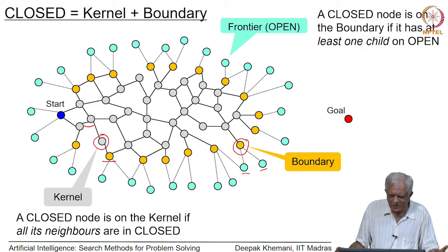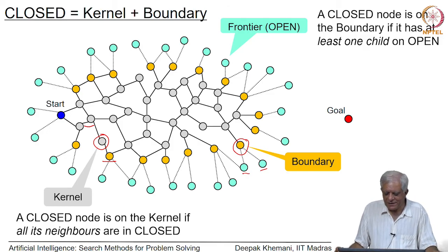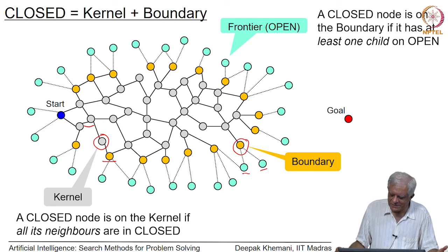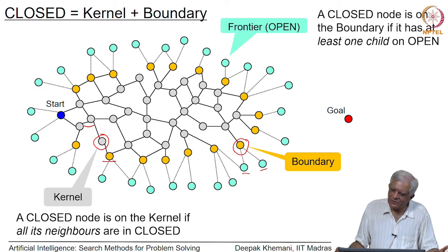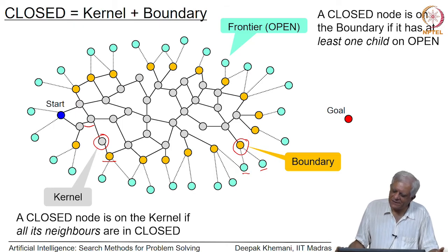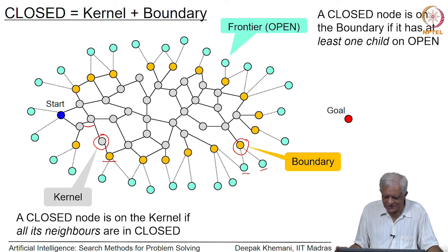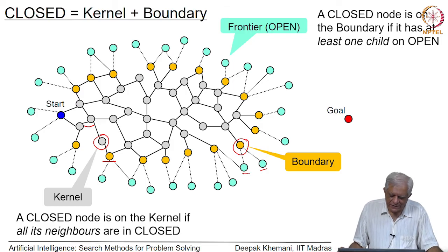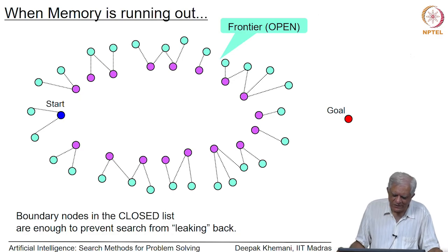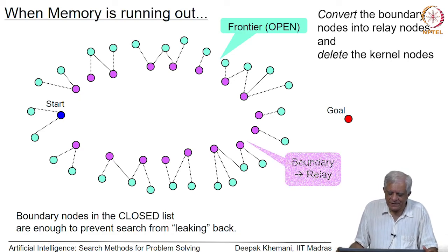Kernel nodes are those which have all their neighbors already in closed, so there is no possibility of them being generated as a child of any node on open. Boundary nodes are those which have some child on open, meaning it is possible that one of those children may be picked for expansion and would generate a neighbor that includes the boundary node. The boundary node alerts us that the search is leaking back. The boundary serves to stop the search from going back, and the kernel is what can be thrown away to save space.